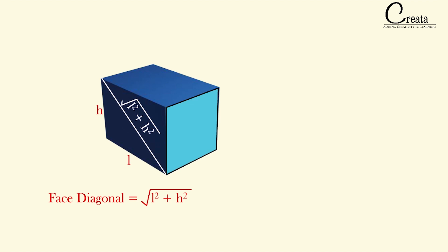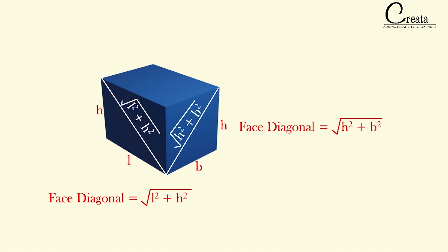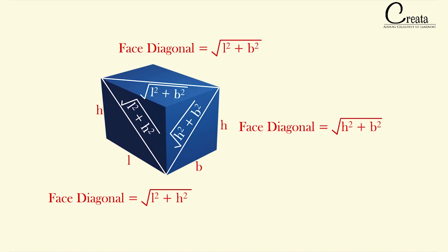Similarly, if we take the next face, we can find the face diagonal using Pythagoras. The dimensions are B and H, so we get the face diagonal as √(H² + B²). Likewise, for the third face with dimensions L and B, we get the face diagonal as √(L² + B²).